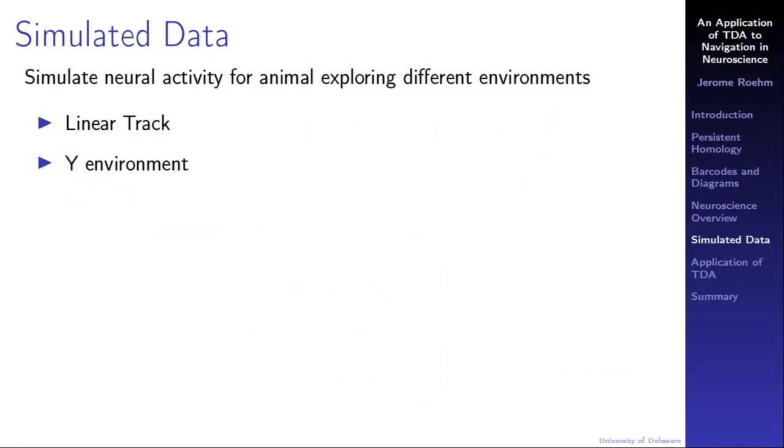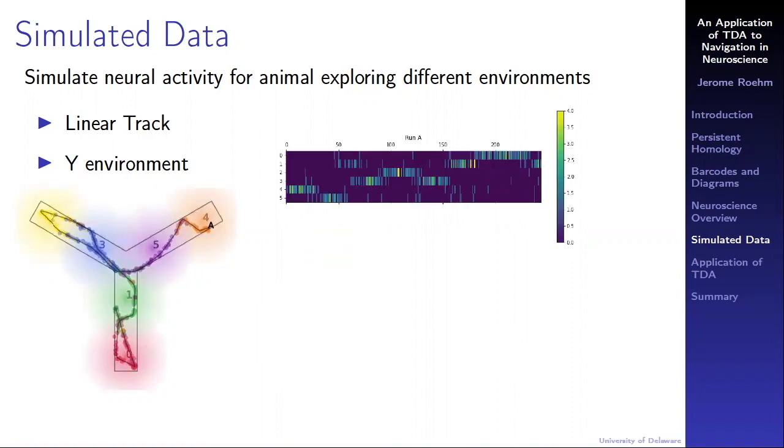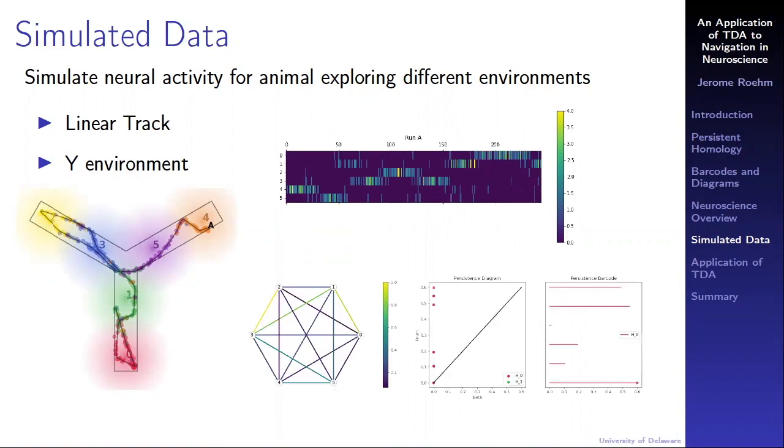I also simulated data from a Y environment, as shown. In the run pictured, the animal starts in place field four, then progresses to place fields five, three, two, one, and zero. Again, we can construct a weighted graph capturing the correlation between the spiking times. From this graph, we can obtain a diagram and a barcode. Note once more the lack of one dimensional holes.